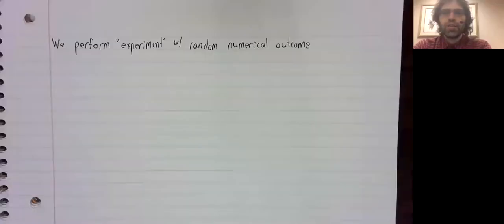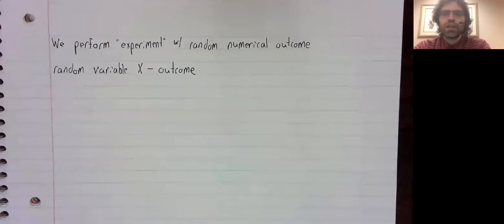We are envisioning some experiment that has a random numerical outcome. The random variable is the outcome.